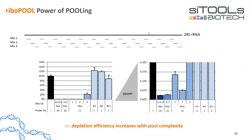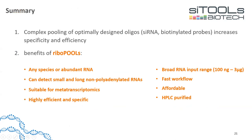To illustrate the power of pooling: when comparing a single oligo attempting to deplete 28S human rRNA versus increasingly complex pools, the single oligo is quite inefficient. As you increase the oligo pool complexity, depletion efficiency increases dramatically. This is why we pool our oligos — highly complex pools ensure high specificity and efficiency.